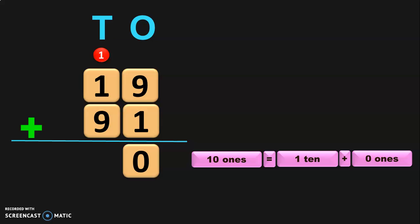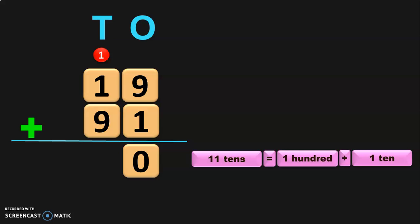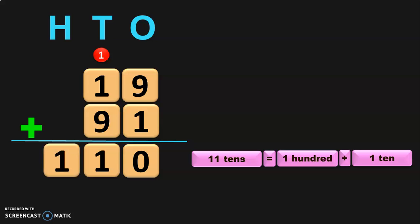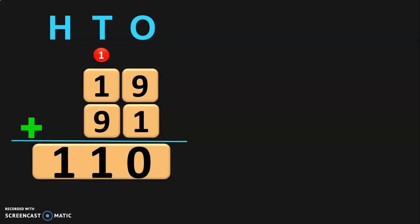Add the digits in the 10's place. 1 plus 1 is 2, and 2 plus 9 is 11. So, you get 11 tens. 11 tens can be regrouped as 1 hundred plus 1 ten. So, retain the 1 ten in the 10's place and take the 1 hundred to the next place value, the 100's place. So, the sum of the two 2-digit numbers 19 plus 91 is 110.